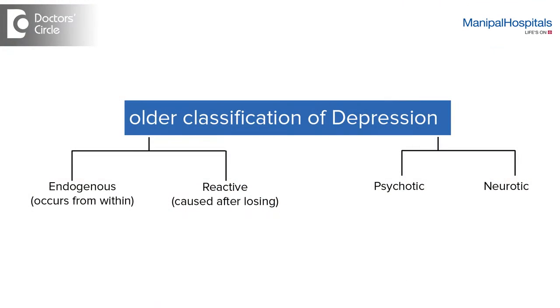There are several ways of looking at depression, but I think the easiest way of classifying depression is into major or minor depressions. The older classification called it Endogenous and Reactive Depression. What it basically means is that some depressions are due to life stresses such as losing somebody, loss of a job, having had to shift your family totally, or being away from others.